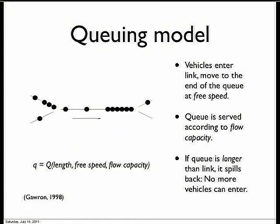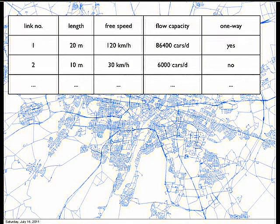The kind of policy measure we look at is, for example, introducing an evening toll — that's already an advanced measure. Simpler things include evaluating what happens if you remove a bridge, or how sensitive the system is to a particular road segment. Possible agent reactions include using a different route, traveling earlier, or switching to public transport to avoid the evening toll. Since we use a population of individual people, we can disaggregate these reactions and see where the people live who benefit most, or what income class they belong to.